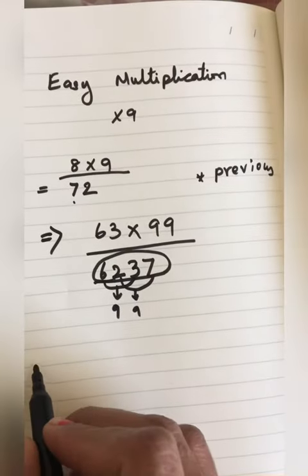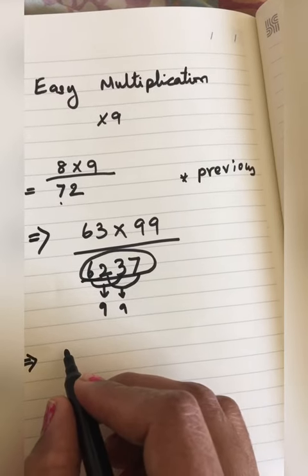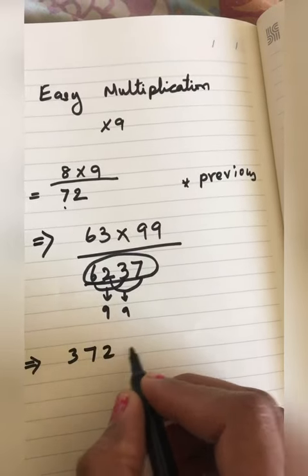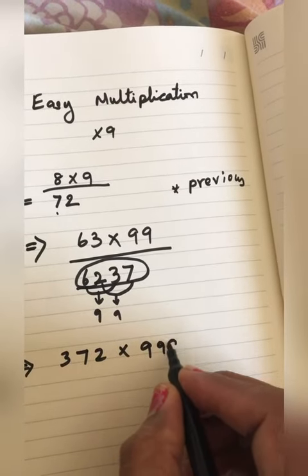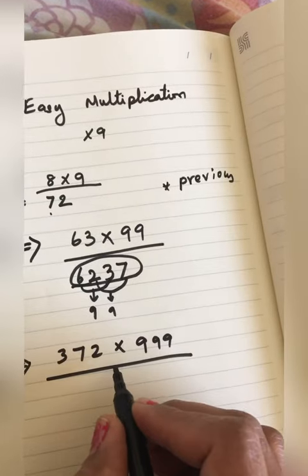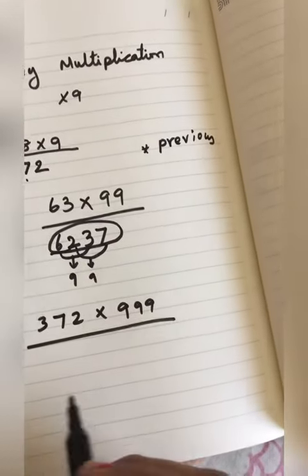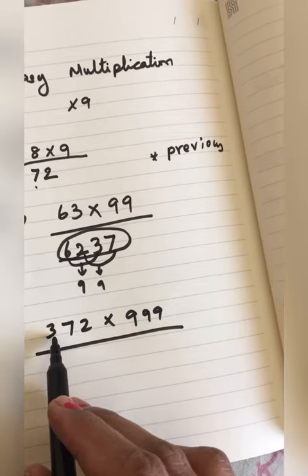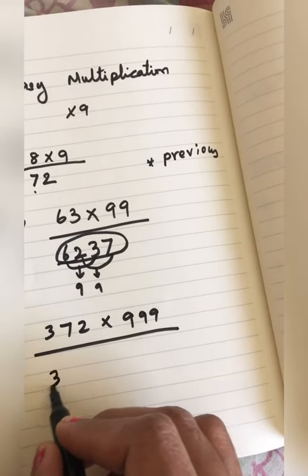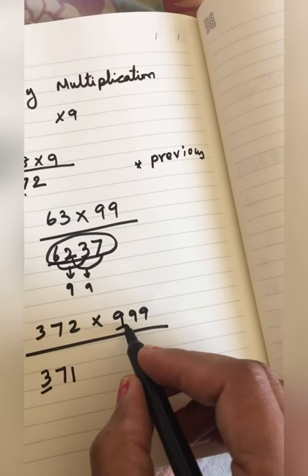Next, we will do the same for 3-digit numbers. For example, 372 multiplied by 999. So how do we do it? We have to write the previous number. What is the previous number? It is 371. Then we have to compare these two sets of digits.